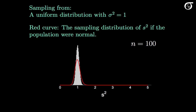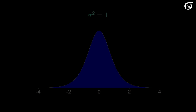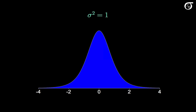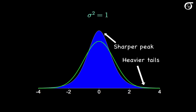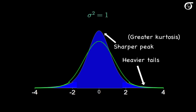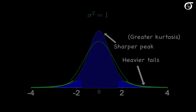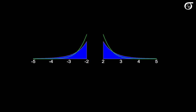Now let's look at a distribution that has heavier tails than the normal distribution. Here we'll sample from the distribution in blue, which is based on the t distribution with 5 degrees of freedom, rescaled such that it has a variance of 1. The green curve is a normal distribution with the same mean and variance. This blue curve has a sharper peak and heavier tails than the normal distribution, so the distribution in blue has greater kurtosis than the normal. Far out in the left and right tails the distribution in blue has heavier tails than the normal, which will result in more extreme values of s squared and overall more variability in s squared.